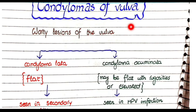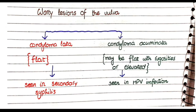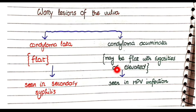Condylomas of the vulva can be categorized into condyloma lata and condyloma acuminata. Condyloma lata are flat lesions and they are seen in secondary syphilis — remember, condyloma lata are flat. In contrast, condyloma acuminata may be flat with rugosities, meaning they may appear as flat lesions with rough projections, or they may be elevated above the surface of skin.